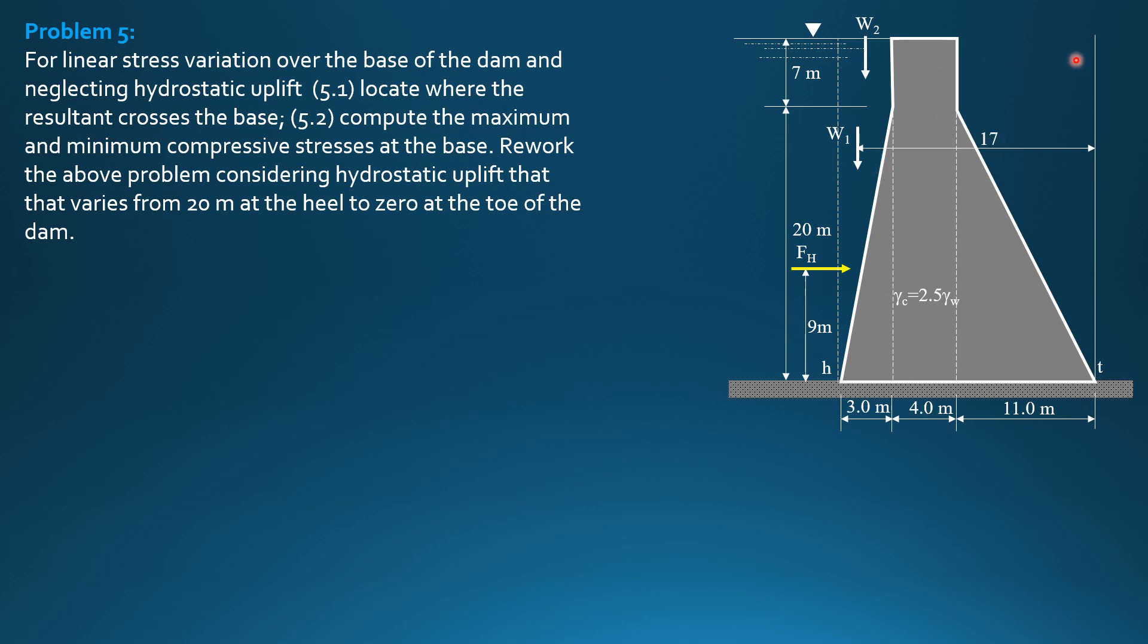Weight sub 2 is at distance 18 minus 1 half of 3, 1.5, so 16.5 meters. Weight 3, due to masonry, 1 third of 3 is 1 plus 15, so 16 meters from the toe.